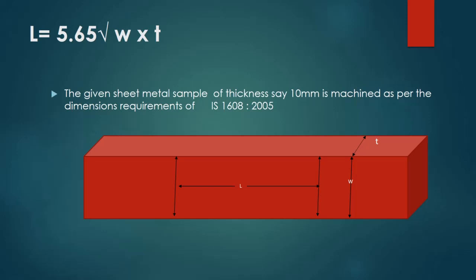The gauge length is given by the formula 5.65 multiplied by the square root of the original cross-sectional area. Here the cross-sectional area is the multiplication of W and T, that is the width and thickness of the rectangular specimen. Once the gauge length is measured, it is marked on the center of the specimen and it is gripped at the two ends and pulled apart in a machine by the application of a load.